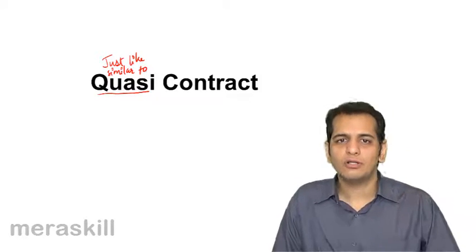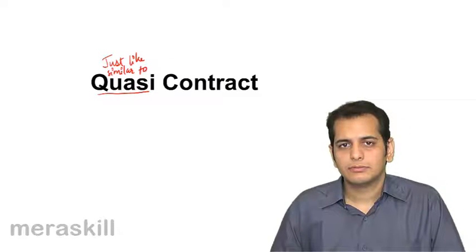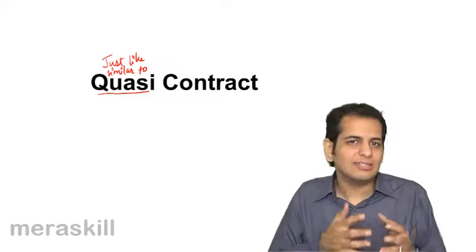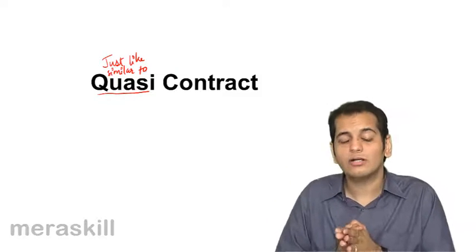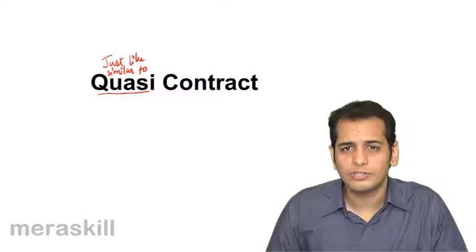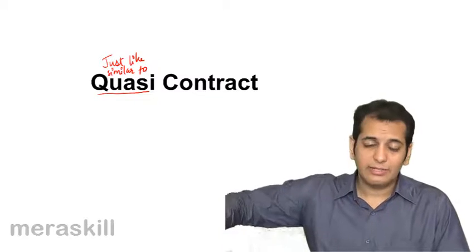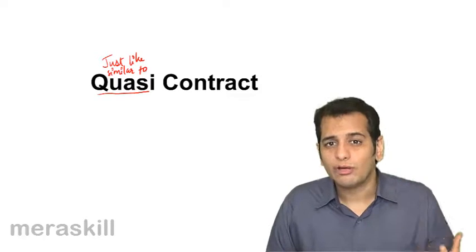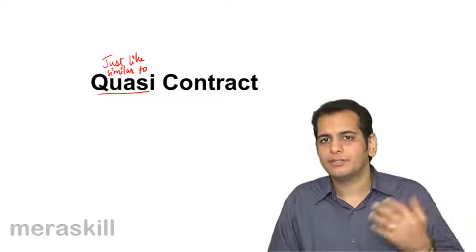This is what we call the quasi-contract. Because this is not actually a contract in that sense. This is just like a contract, similar to a contract, but not a contract in the first place. And this is the reason why it is called a quasi or quasi-contract. So now let's see what a quasi-contract is in detail, what are its features and what are its types.